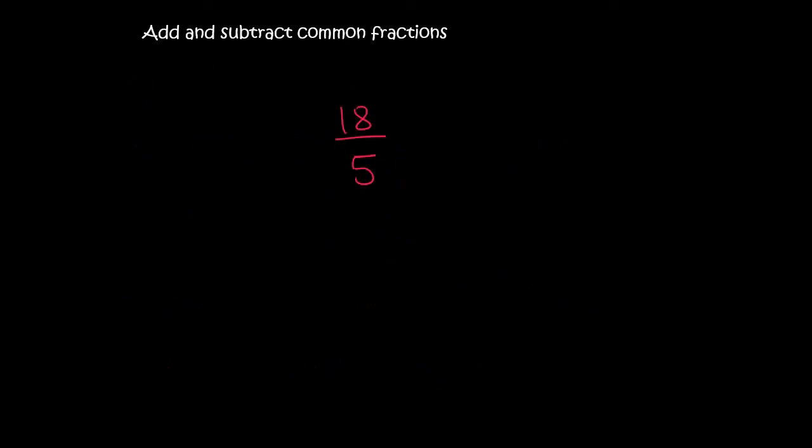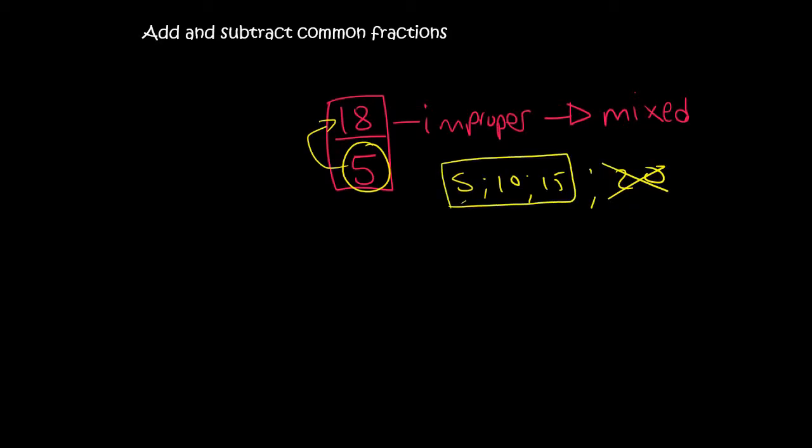Sometimes you need to convert an improper—remember we said an improper is when the top number is bigger than the bottom number—and sometimes we need to convert that back to a mixed. So what we do is we see the number 5 and we see how many times can 5 fit into 18. Well, we can say 5, 10, 15. You can't go to 20 because that's too far. So it fits in 3 times, so we say 3. And then how much is left over? Well, 5, 10, 15. You still needed another 3 to get to 18. So we still have a 3 left over, and so we say 3 out of 5.